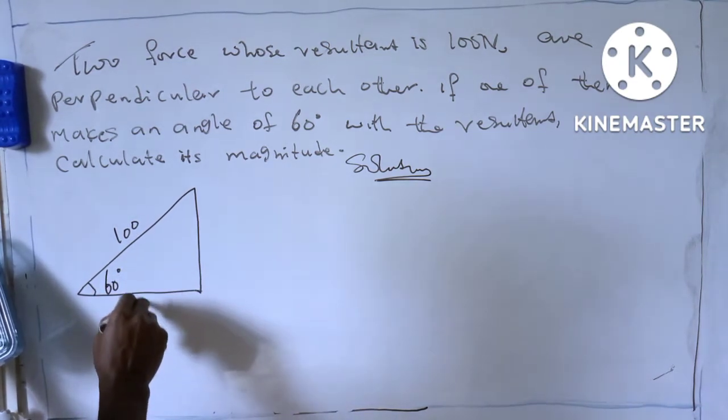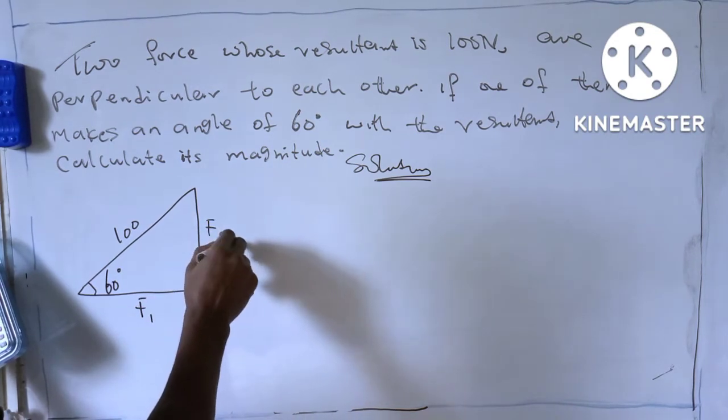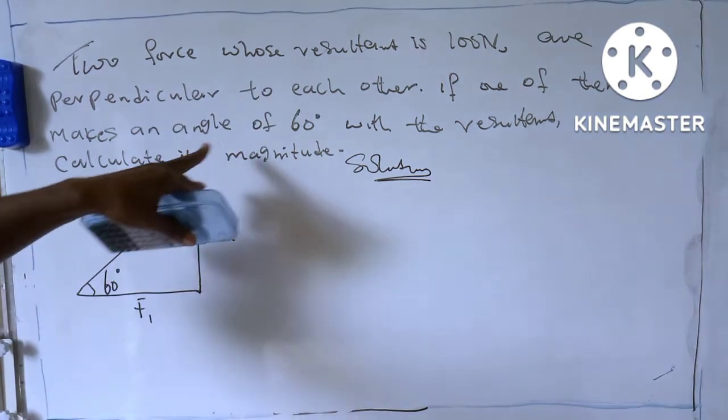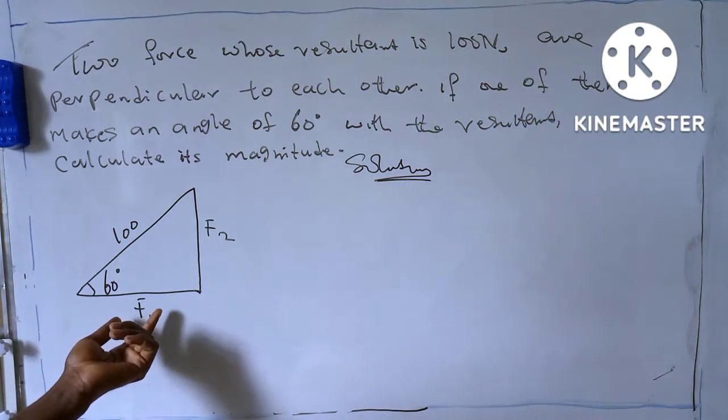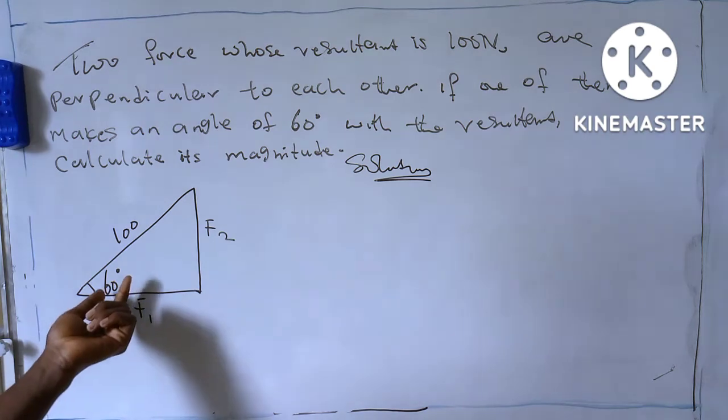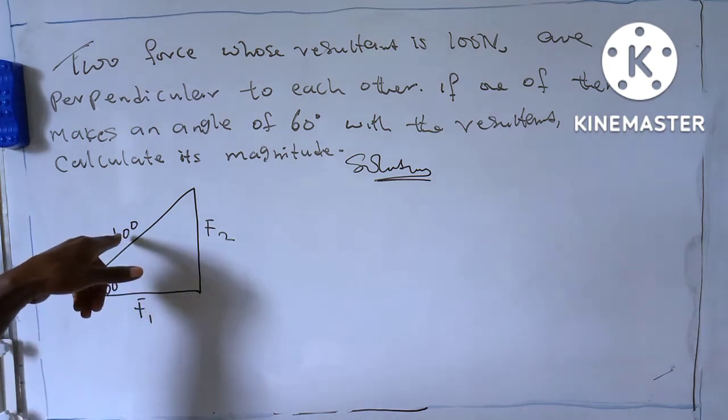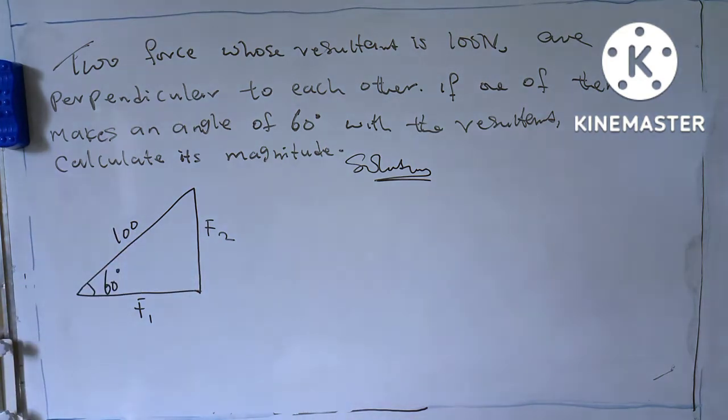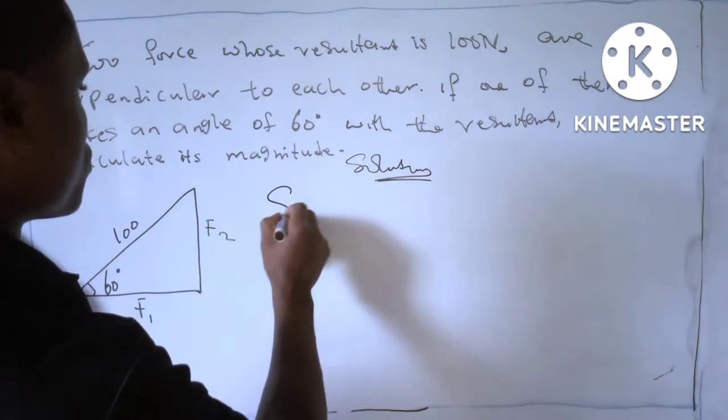Let's make this one F1 and this one F2. One of them makes an angle of 60 degrees with the resultant. So we see that F1 is attached to this 60 degrees and is also connected to the resultant, which is 100 Newton. So let's use SOH CAH TOA.